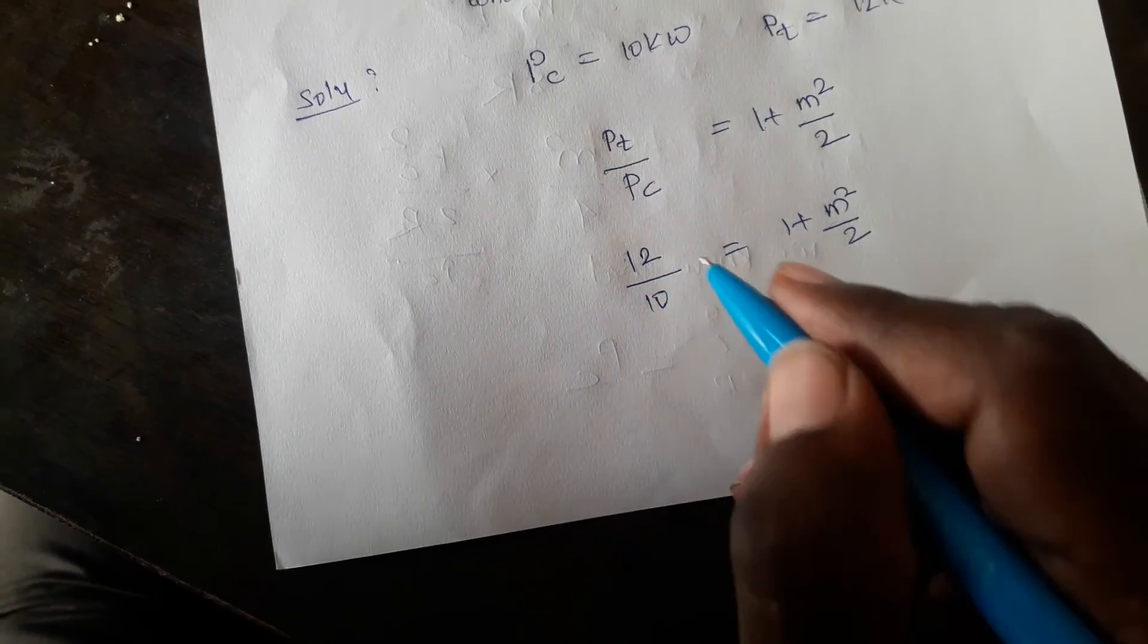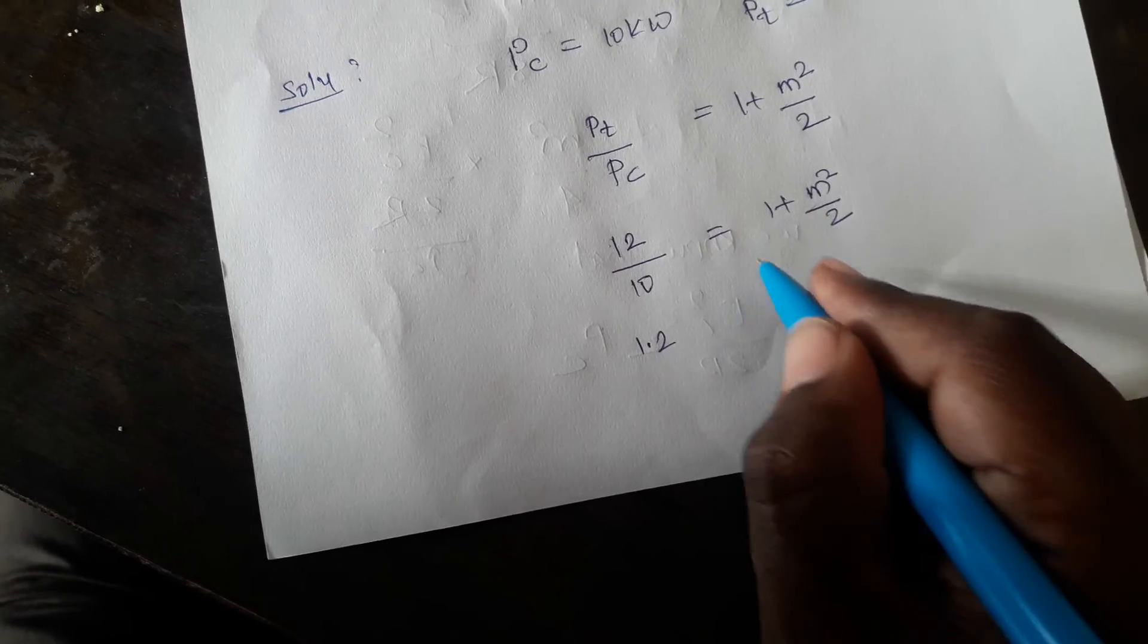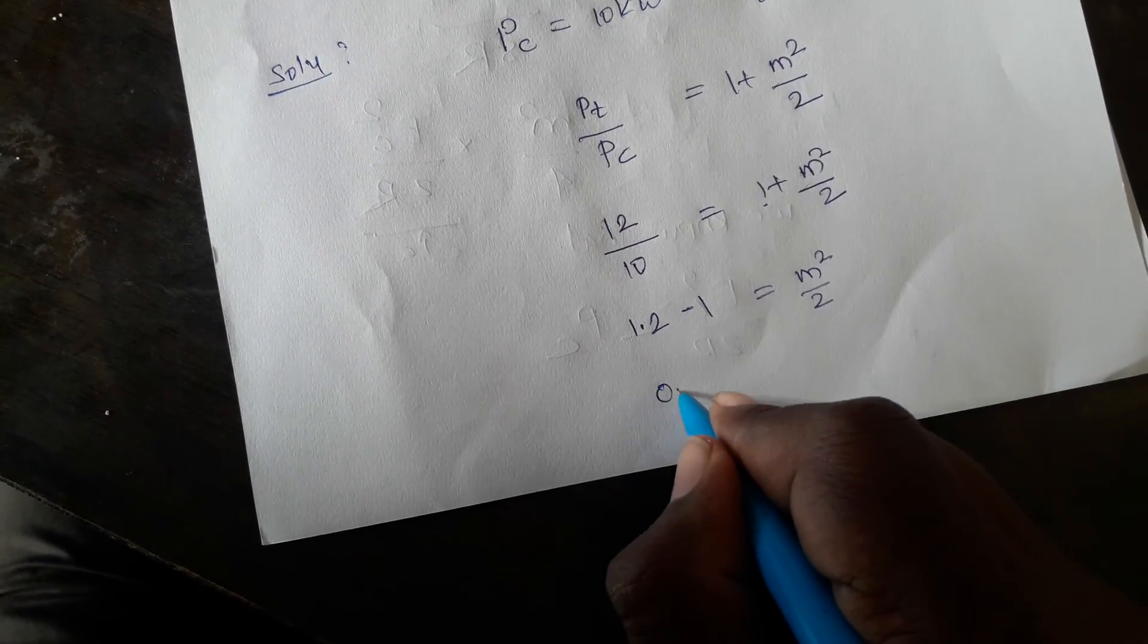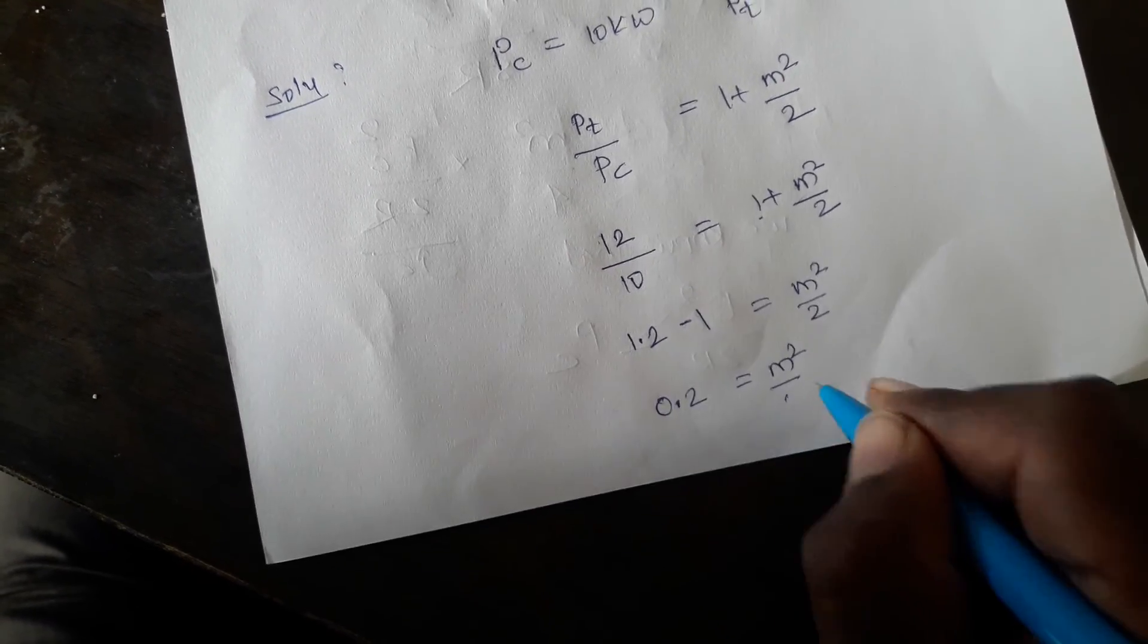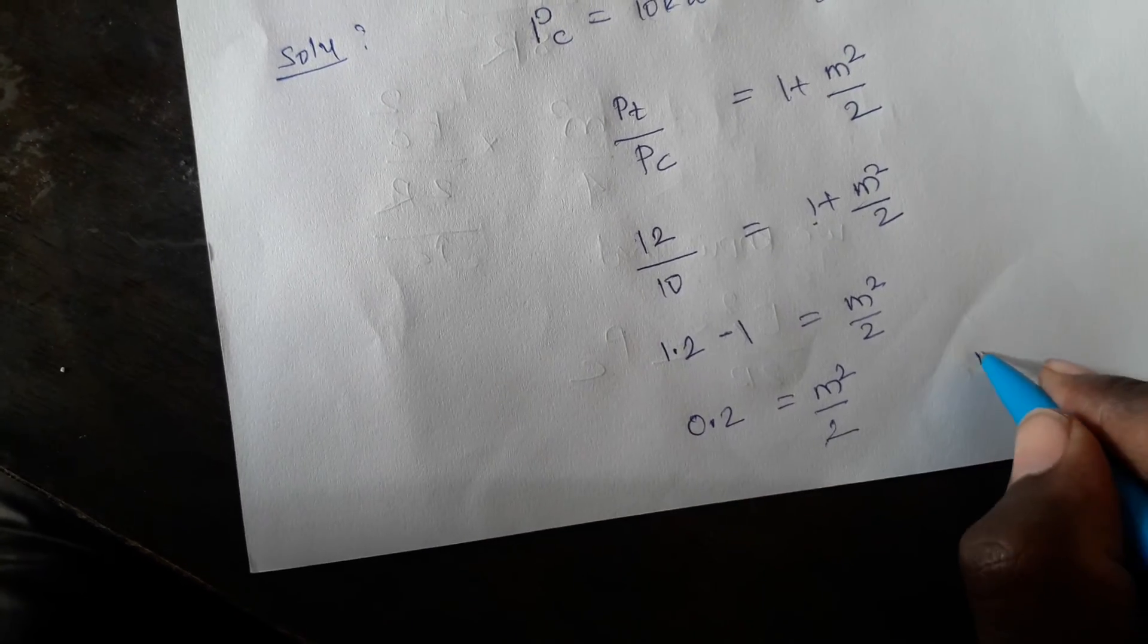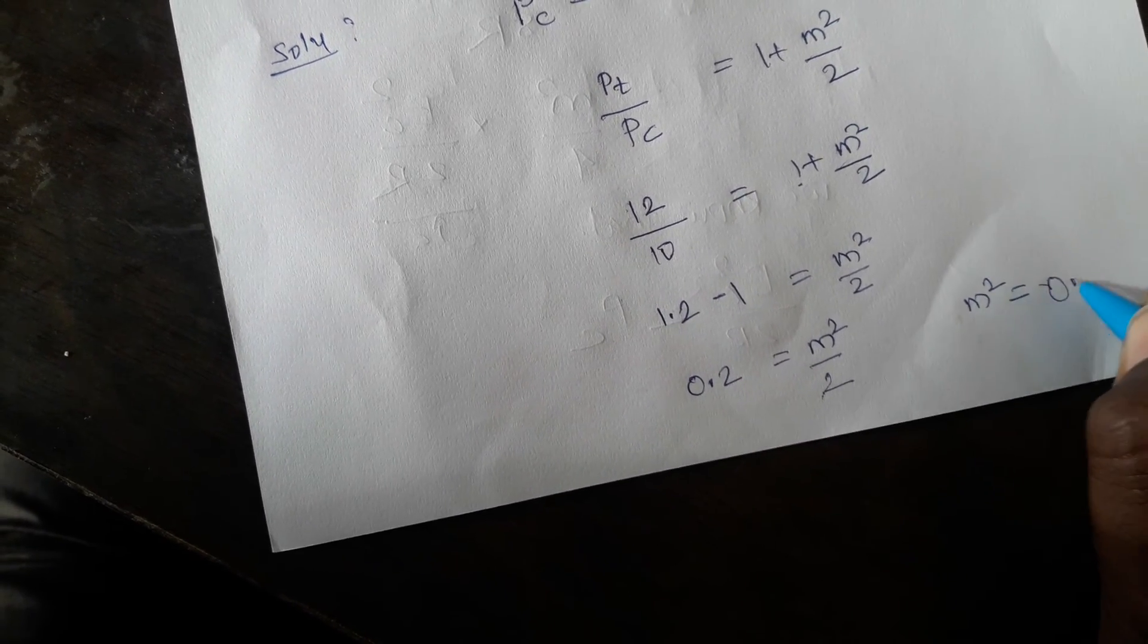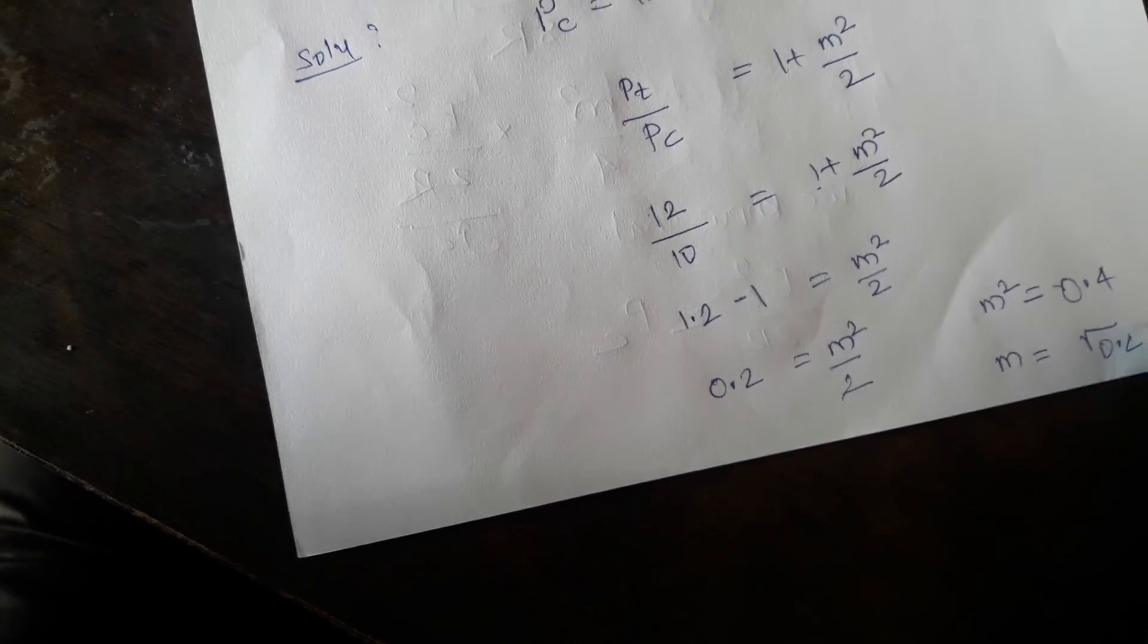So 12 divided by 10 equals 1.2. Subtracting 1 gives 0.2, which equals m squared divided by 2. Therefore m squared equals 0.4, and m is the square root of 0.4.